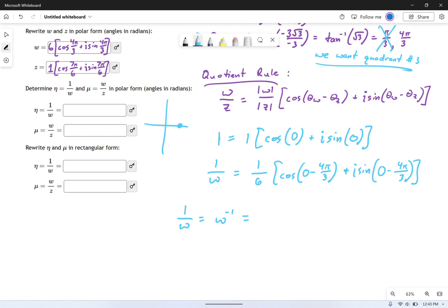If you remember what the power rule formula says, it says that the way you calculate this thing is you simply raise the modulus to the same power. And then you have what's inside here being angles multiplied by that negative one or the exponent. So this becomes negative one times theta W plus I sine of negative one times theta W.